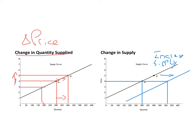We can also illustrate a decrease in supply, shown here with a green supply curve. That would be a leftward shift in the supply curve. When we describe changes in supply, we think in terms of left and right: shifting the supply curve to the right illustrates an increase in supply; shifting to the left illustrates a decrease in supply.